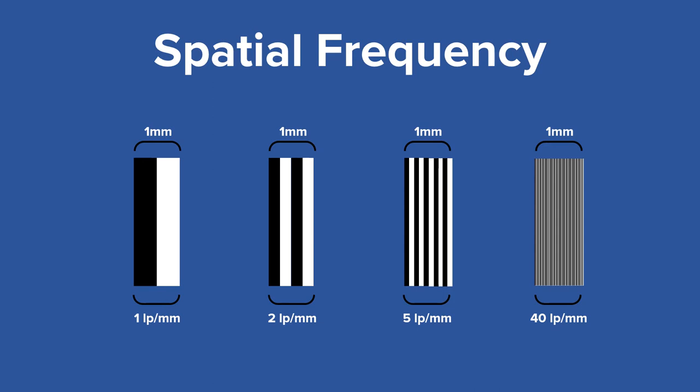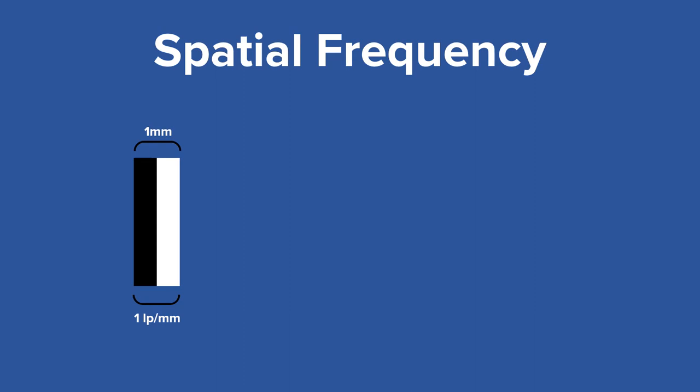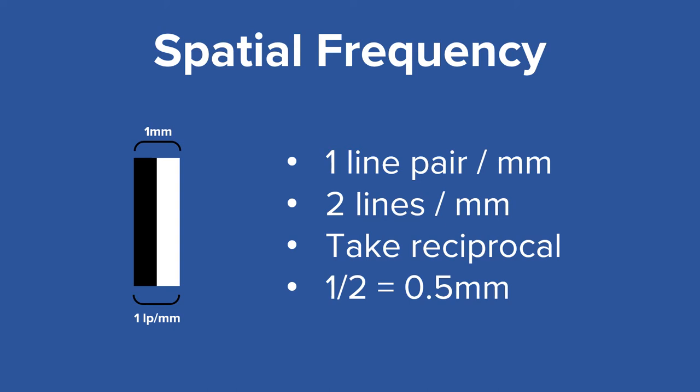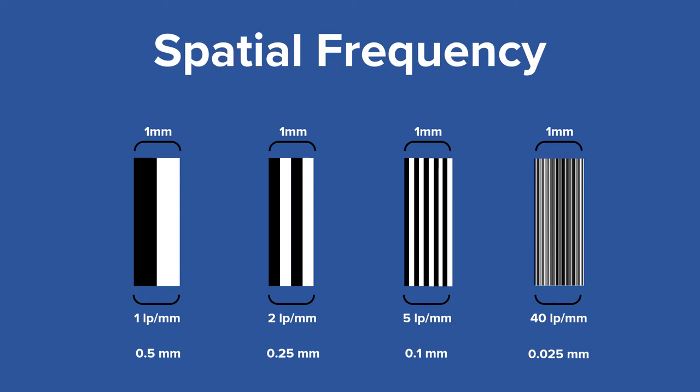Spatial frequency is a measure of how small you can see an individual object. For example, if we have one line pair per millimeter, we're actually seeing two lines per millimeter. If you take the reciprocal of that, you're actually being able to see an individual object that is 0.5 millimeters. At one line pair per millimeter, you can distinguish an object that is 0.5 millimeters in length.